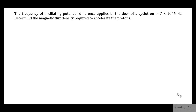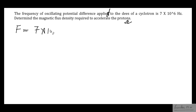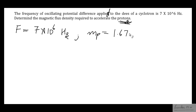The frequency of an oscillating potential difference applied to the D's of a cyclotron is 7 megahertz. Determine the magnetic flux density required to accelerate the protons. What have you been given? The frequency of the applied electric field is f = 7 × 10⁶ Hz. Since you are working with protons, the mass of the proton is a standard value: m = 1.672 × 10⁻²⁷ kg.